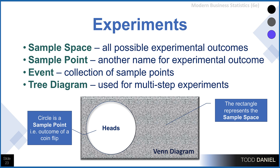Statistical experiments involve a sample space — all possible experimental outcomes, represented here by the gray rectangle. A sample point is another name for an experimental outcome, such as heads or tails in the flip of a coin. An event is a collection of sample points, such as multiple flips of a coin. A tree diagram can be used for multi-step experiments, where we get a probability at step 1, another at step 2, another at step 3, and the combinations of those probabilities give us a range in which the event is likely to occur.